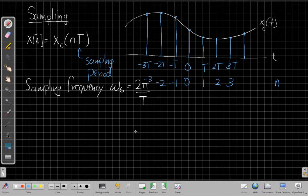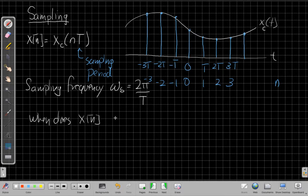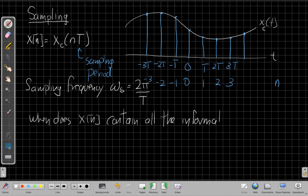And so the natural question that we ask ourselves, if we're going to do this, is when does x of n contain all the information, contain all the information in the original continuous time signal, x of t.